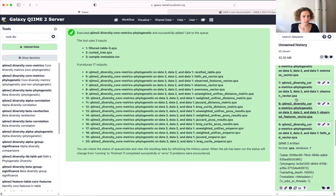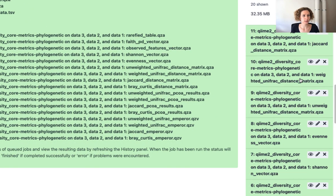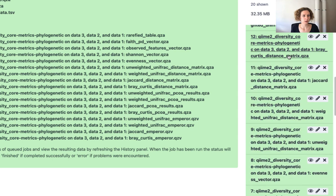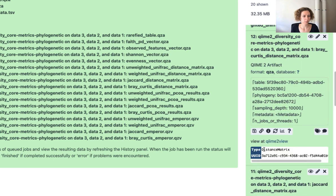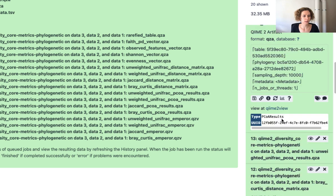So what else? These are all the vectors. We have the distance matrices. These are of artifact type distance matrix. And then the PCoA results, they're type PCoA results.